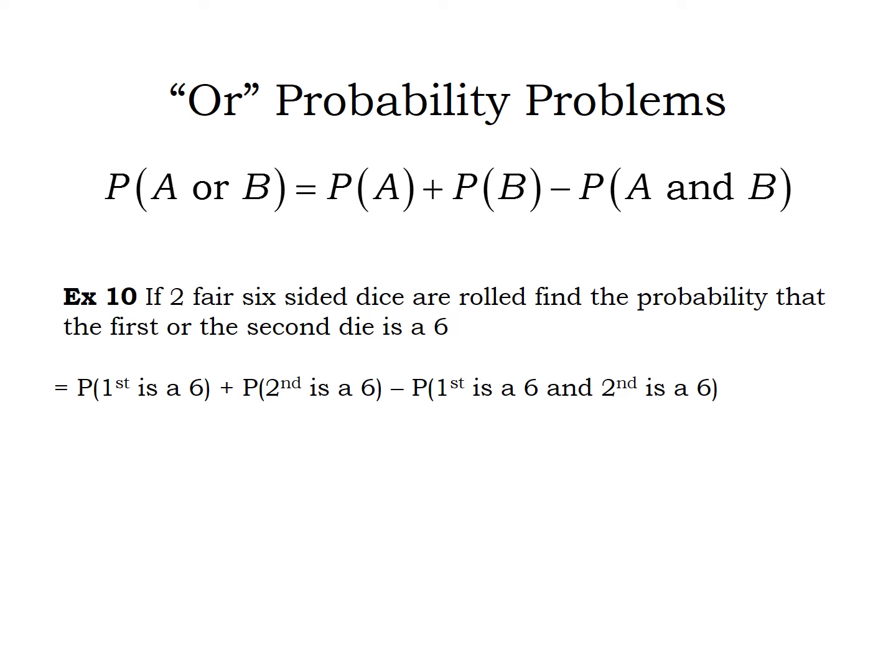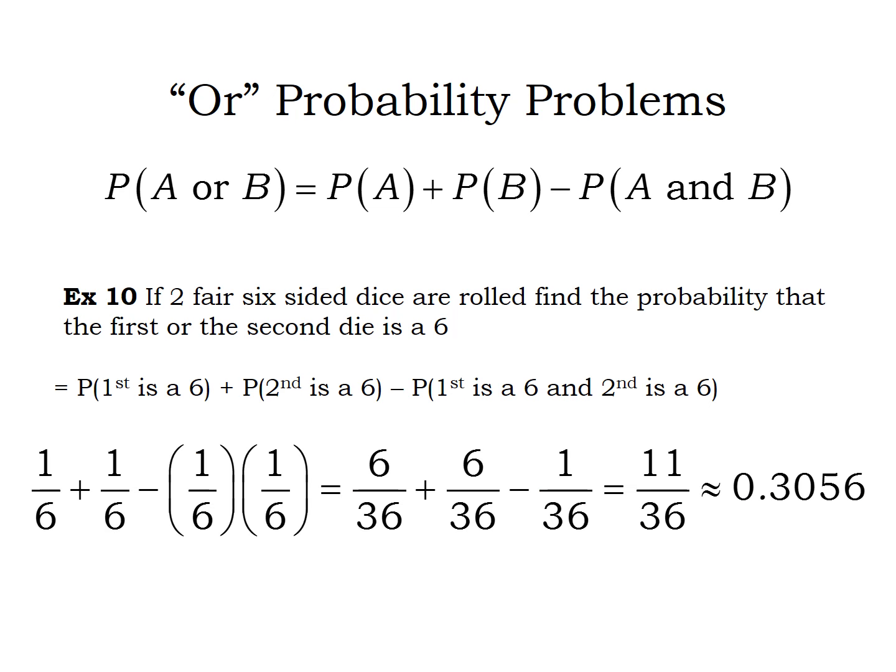For the last term, we need the probability that the first is a six and the second is a six. You can count all 36 possible combinations of two dice, or use the multiplication rule since these are independent events. So the probability is one-sixth plus one-sixth minus one-sixth times one-sixth, which is one-thirty-sixth. Converting to a common denominator: six-thirty-sixths plus six-thirty-sixths minus one-thirty-sixth simplifies to eleven over thirty-six.